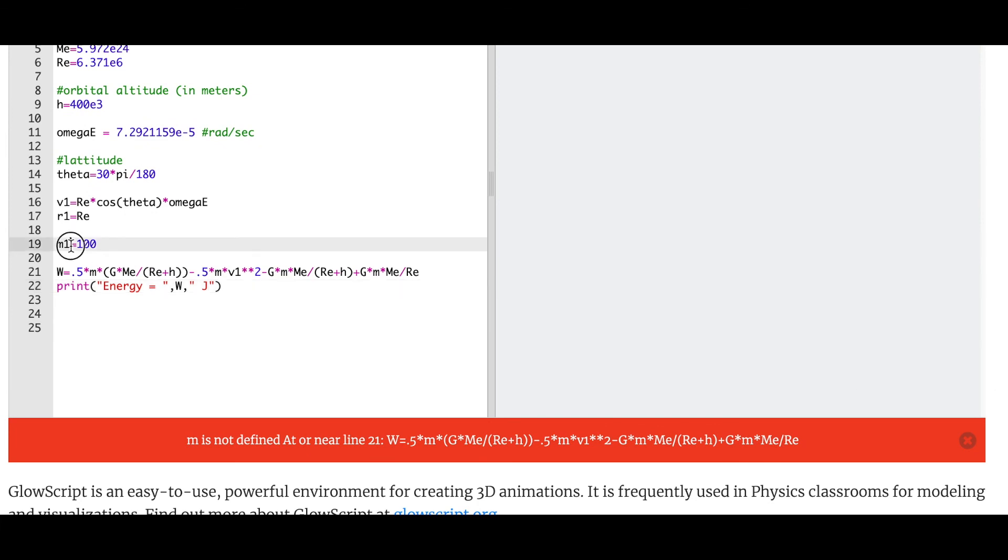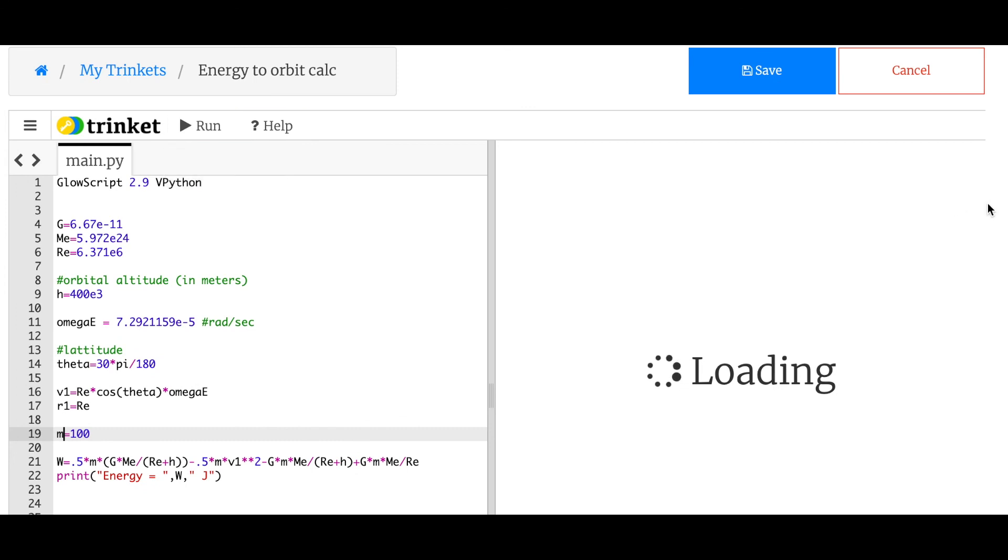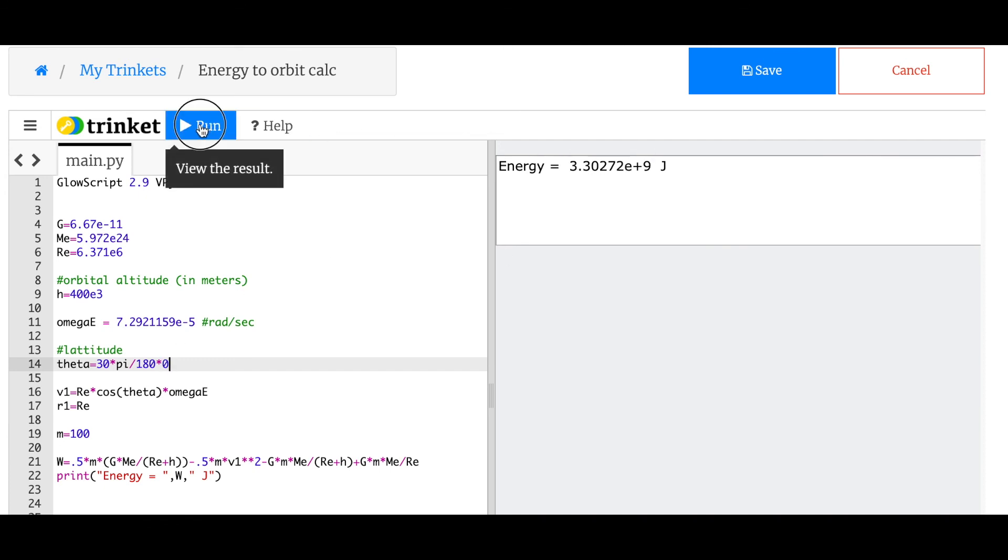And I made an error. I said m1 instead of m. Let's change theta to zero. So from the equator, that's 3.3 times 10 to the ninth. I gain like 10% by launching from the equator, which that's a pretty big deal.